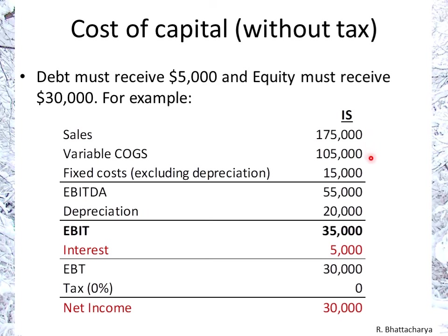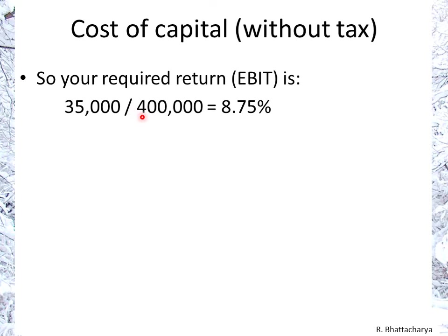Here we have sales, variable costs, fixed costs, depreciation — we end up with an EBIT of $35,000. Off of that we pay interest of $5,000. There are no taxes, so our earnings before tax (EBT) is $30,000, and with no tax that $30,000 becomes the net income, which is enough to satisfy our equity that needs a $30,000 return. The EBIT was sufficient to pay our capital. The required return on the $400,000 invested is $35,000 over $400,000, or 8.75%, which effectively becomes our hurdle rate for the project.